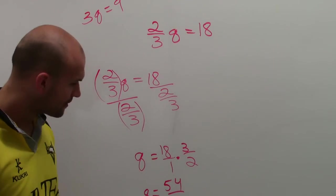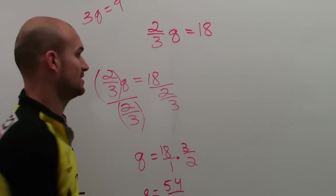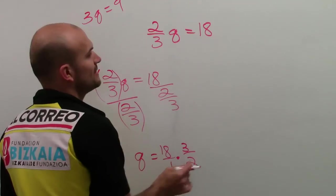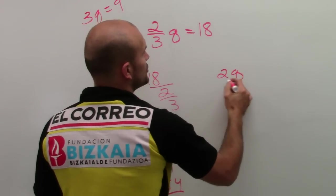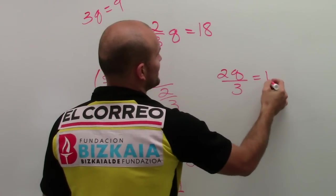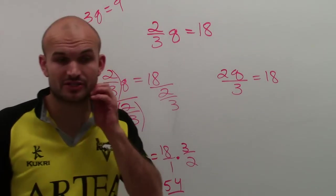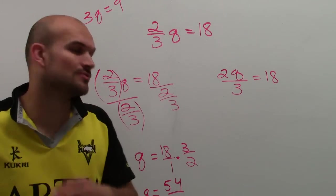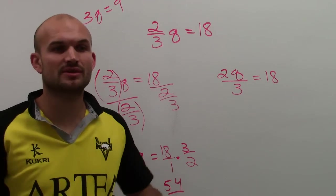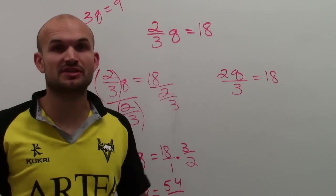The other way I like to look at it is a lot of times I like to rewrite this fraction as 2q divided by 3 equals 18. Now this turns it into a two-step equation, which is another module. But here you can still see if you just follow multiplication and division, doesn't matter which one you do first.